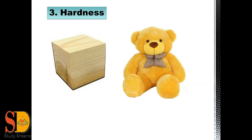The third property is hardness. Hardness means how hard or soft a material is. Some materials can be easily compressed while others cannot. For example, if we try to compress a wooden piece, we will not be able to do so. But if we try the same thing with a teddy bear, we can easily compress it, because the teddy bear is made of cotton and sponge. So different materials have different types of properties.